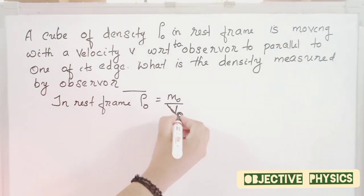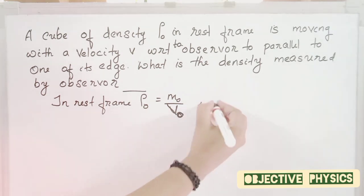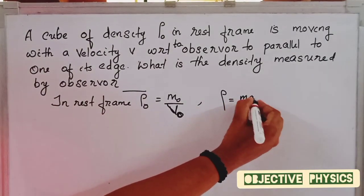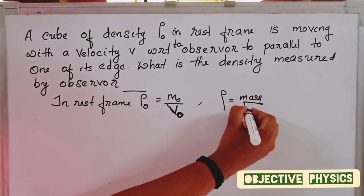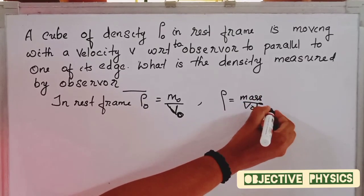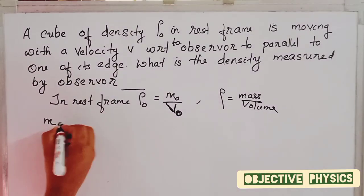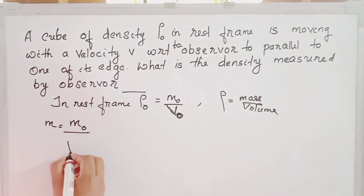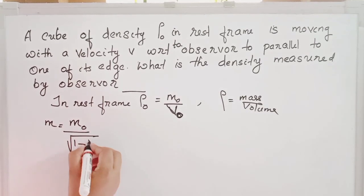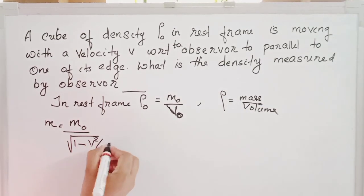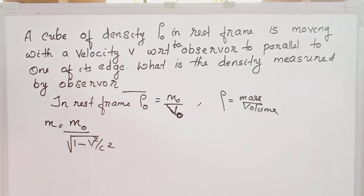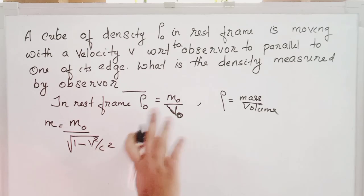Here V₀ is the volume in the rest frame. In the moving frame, density rho is equal to mass divided by volume. The relativistic mass M is equal to M₀ divided by the square root of (1 minus v² by c²).